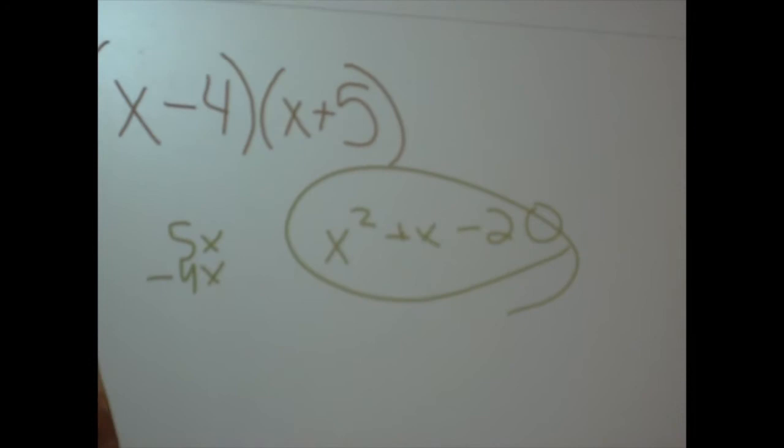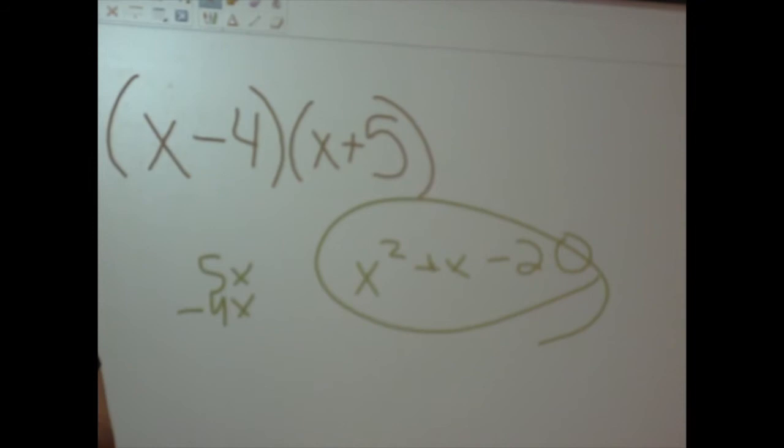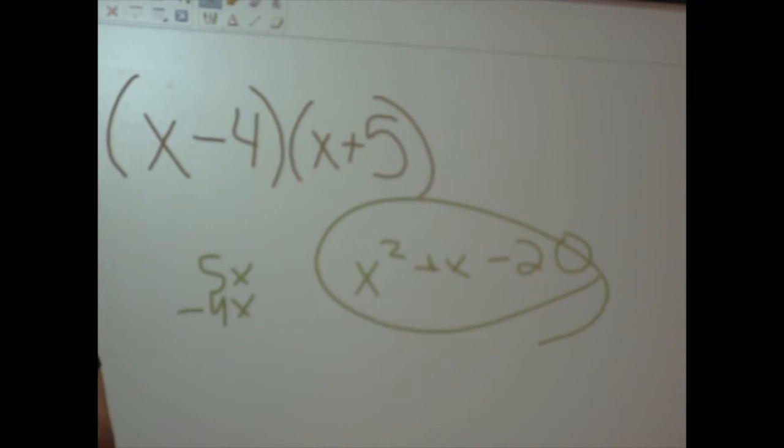Just to recap: what do we use to change the equation to a binomial equation? FOIL. Then what does it stand for? First, outside, inside, last.